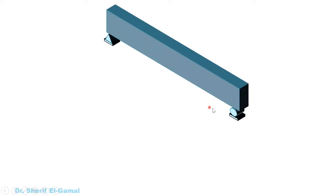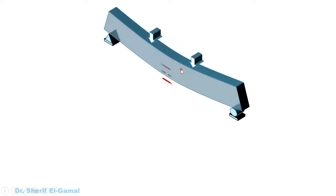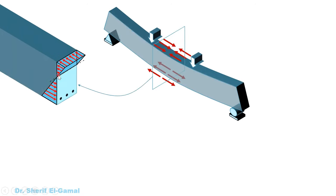If we have a simply supported beam and we apply some load on this beam, the beam will deflect. This will result in tensile forces at the bottom layer of the beam and compressive forces at the upper layers. If we take a section of this beam, we find that the stress distribution at the initial loading stages will be a triangle.